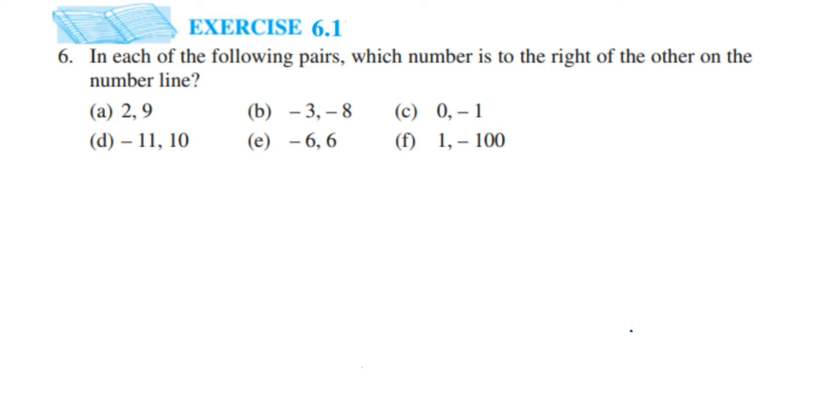The first one is 2 and 9. When comparing two integers, you determine which one is greater. The greater number always lies on the right hand side of the number line. Suppose this is a number line and this is 0. As numbers go towards the right, they become greater. As numbers go towards the left, their value decreases. So whichever number is greater will come on the right. Comparing 2 and 9, 9 is greater, so 9 will be to the right of 2.